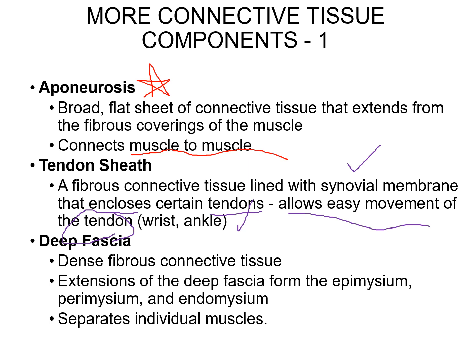Last on this slide is the deep fascia. This is generally fibrous connective tissue — a lot of areolar tissue — and it's just extensions of those mysiums that separate the different muscles. You'll usually find this all over the body, just under the skin — under the hypodermis — right on top of all the muscles.